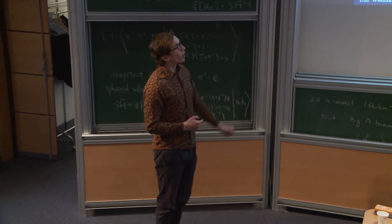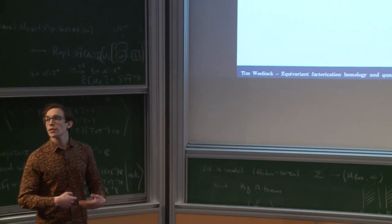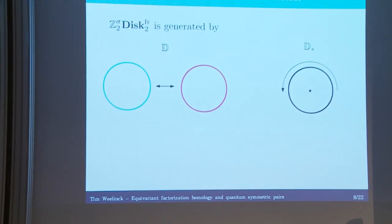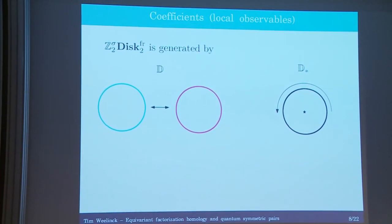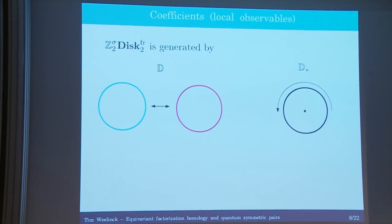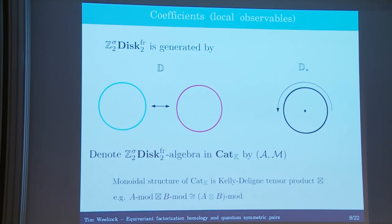D and D-star, which are the names for these orbifolds, will get assigned something. We're going to take our invariants with values in k-linear categories. So one of these functors assigns a category A to D and a category M to D-star. The question is: what structures do these categories need to have in order to define one of these two-disk algebras?